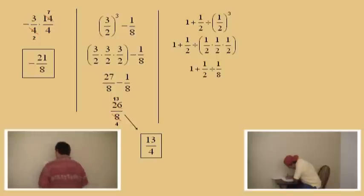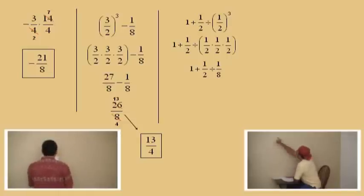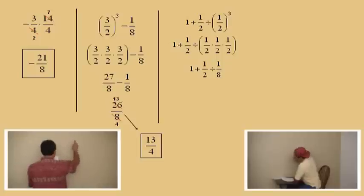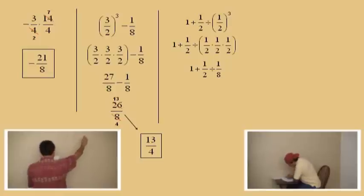So now we have 1 plus 1 half divided by 1 eighth. We have an addition and a division — which has to be done first? The division. So we've got to handle the 1 half divided by the 1 eighth. We're going to change that division to a multiplication.